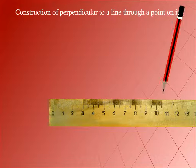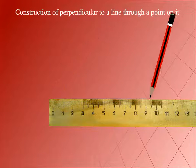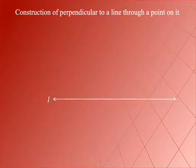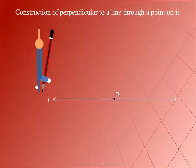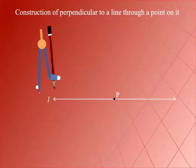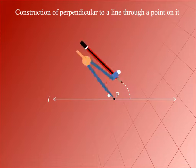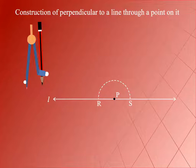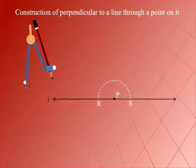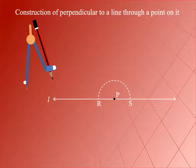Using a ruler and compasses, let L be a line and P be a point on it. With P as centre and a convenient radius, draw a semi-circle that intersects the line L at two points R and S, as shown here.